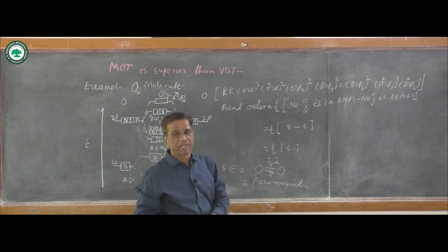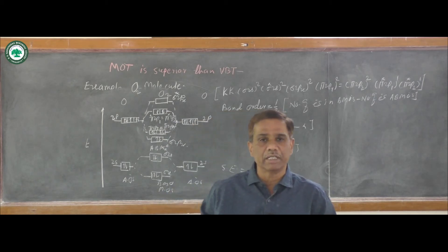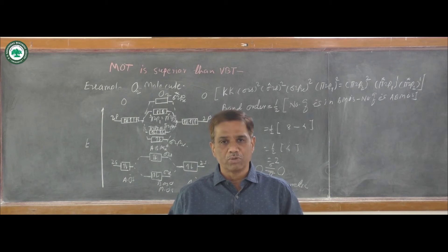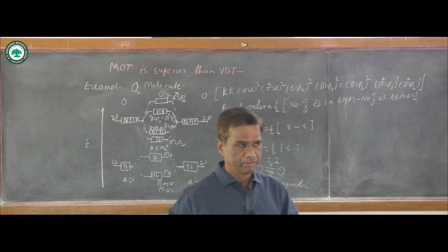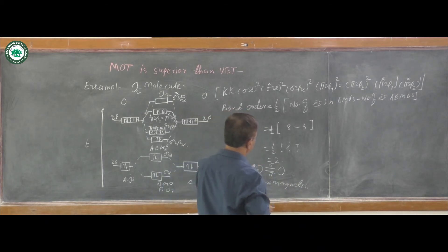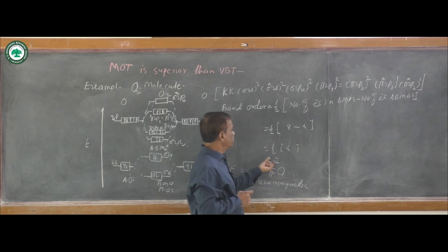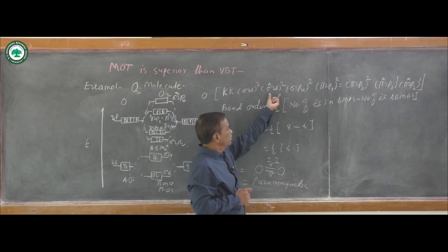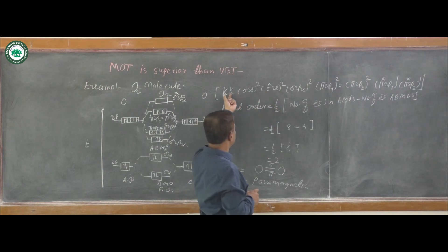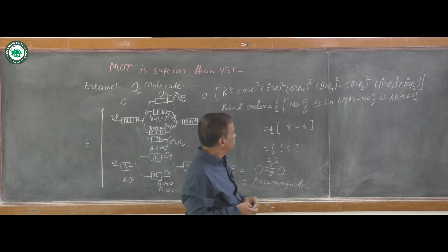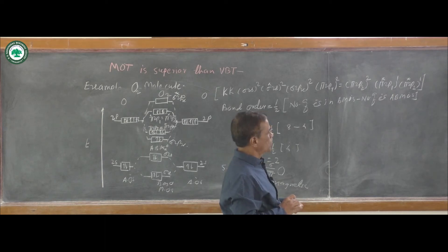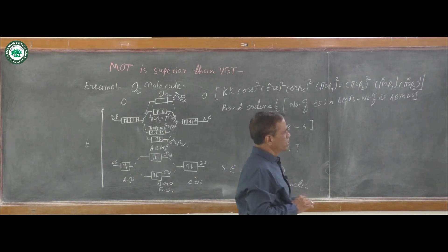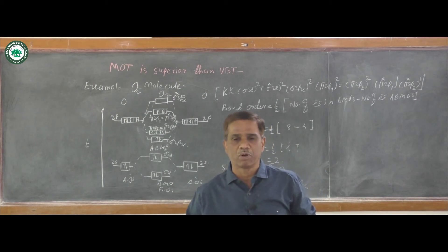Two unpaired electrons are present; therefore the magnetic nature of O2 molecule is paramagnetic. Molecular orbital theory indicates O2 molecule contains two unpaired electrons and when unpaired electrons are present, the molecule is paramagnetic in nature. There is a double bond between two oxygen atoms, bond order equals 2. The electronic configuration is KK sigma 2s2, sigma star 2s2, sigma 2px2, pi 2py2, pi 2pz2, pi star 2py1, and pi star 2pz1.